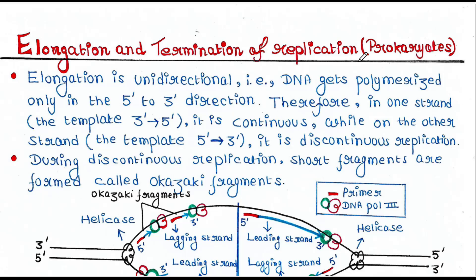Therefore, on one strand, when the template is 3' to 5', the newly synthesized strand is continuous. On the other strand, when the template is 5' to 3', the newly synthesized DNA is in a discontinuous fashion. During discontinuous replication, short fragments are formed called Okazaki fragments.